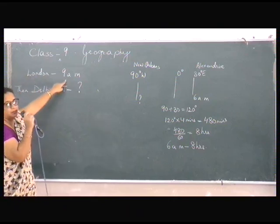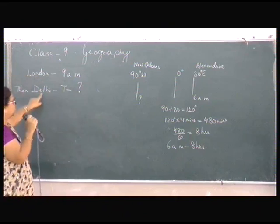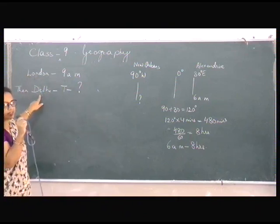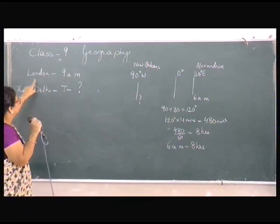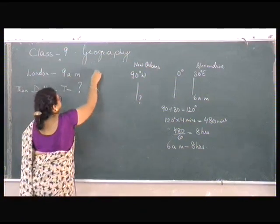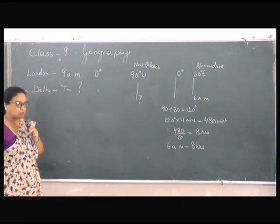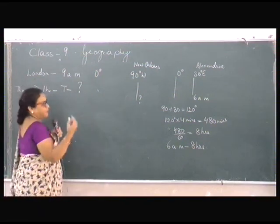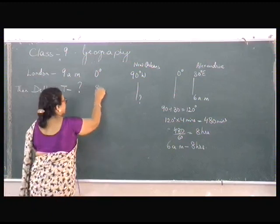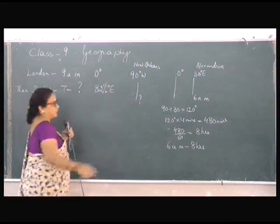Why? Because you have been taught in the chapter that London is at 0 degrees, the Greenwich meridian which passes through London, and Delhi is within India so we take the standard meridian of India, which is 82 and a half degrees east.